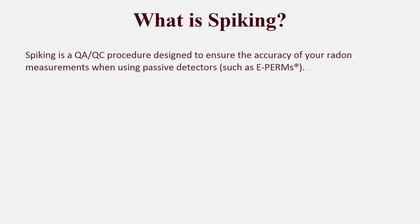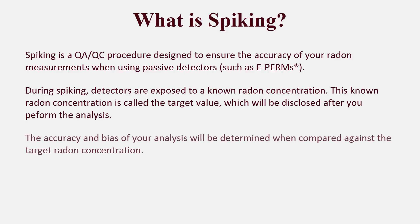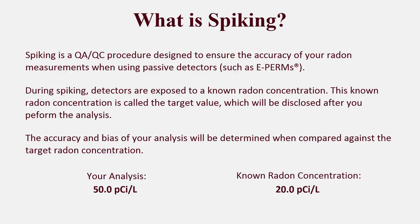What is spiking? Spiking is a quality assurance, quality control procedure designed to ensure the accuracy of your radon measurements when using passive detectors. During spiking, your detectors are exposed to a known radon concentration called the target value. At Radelec, we perform blind spiking, so you won't know the target radon concentration until after you've analyzed the detectors. The accuracy and bias of your analysis will be determined when compared against this target radon concentration.